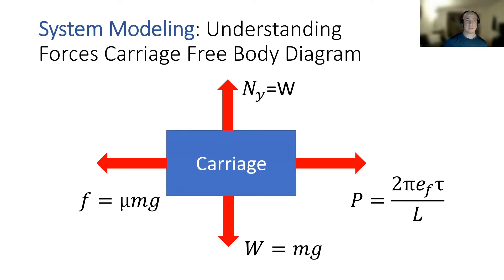While this isn't inherent or necessary for coming up with our dynamic system model or governing equations, it is useful to understand the forces on the carriage. So in the horizontal direction, we have the thrust force coming from the lead screw. Opposing that, we have frictional force that comes between the carriage and the rails.